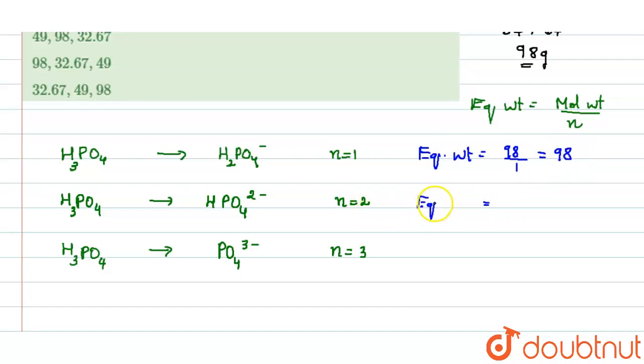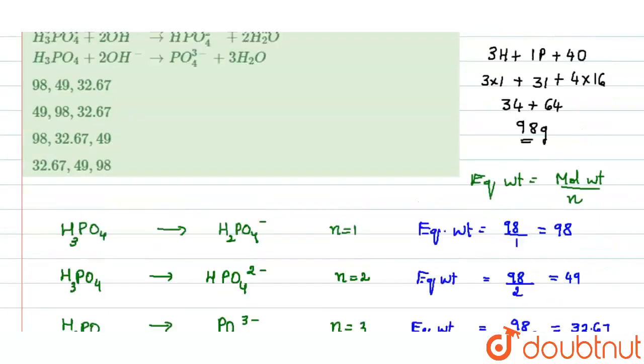2, so equivalent weight is equal to 98 divided by 2, that is 49. In the third case, equivalent weight is equal to molecular weight that is 98 divided by 3, that is around 32.67.